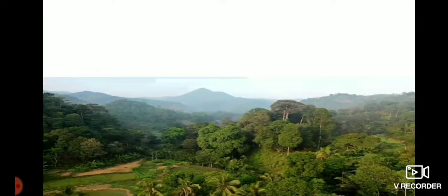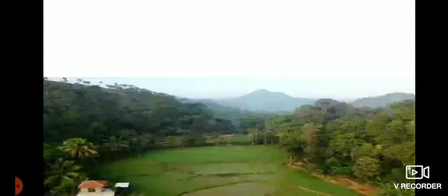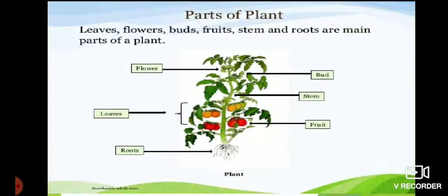Let us get to know the different parts of any plant. This will help us understand the difference between plants of different kinds. Let us recall what we studied in our lower classes. Parts of a plant: leaves, flowers, buds, fruits, stem, and roots are the main parts of a plant.